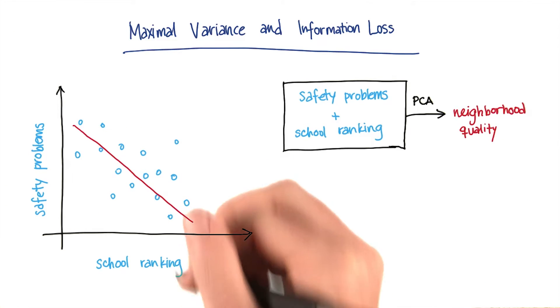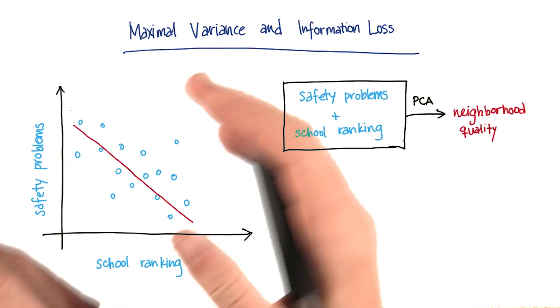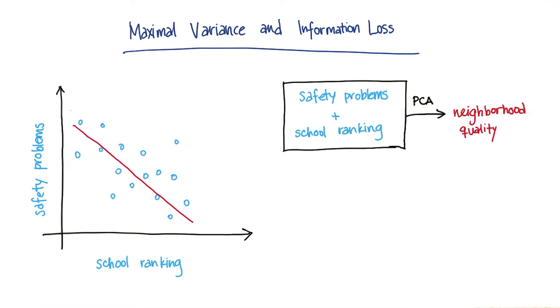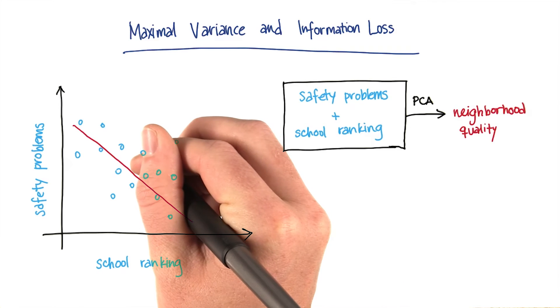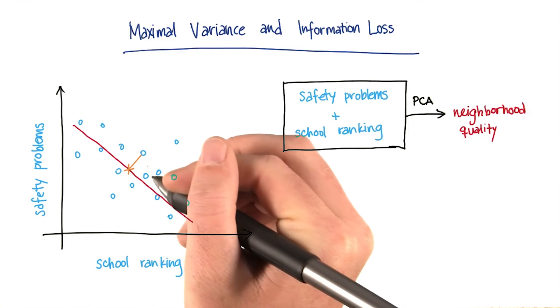Just by visually inspecting the data, we can see that something like this red line is the principal component. When I project the two-dimensional points onto this one-dimensional line, I'm going to be losing information. The amount of information that I lose equals the distance between a given point as it existed in the 2D space and its new spot on the line.